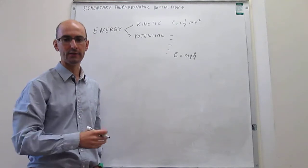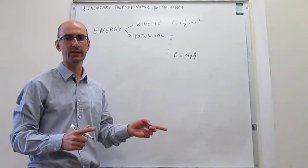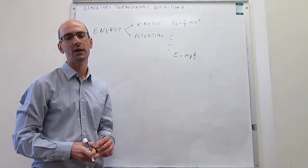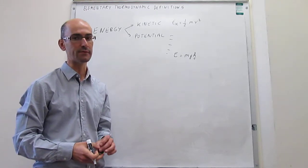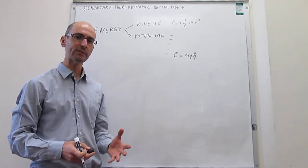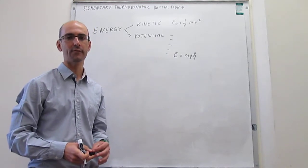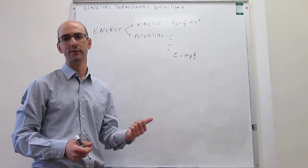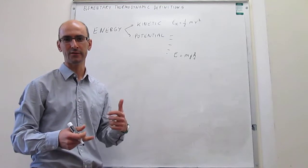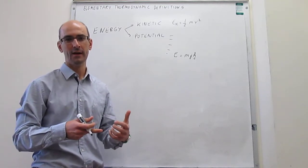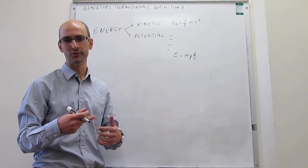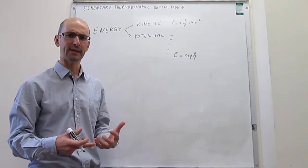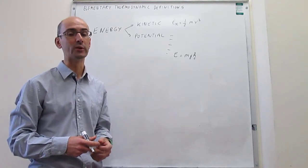That is the definition of energy and its two variants, kinetic and potential. For a molecular system, the calculation of potential energy is extremely difficult because you would need to calculate all of the possible interactions between the particles of your system — all of the interactions between electrons and protons of the nucleus, proton-proton repulsions, electron-electron repulsions and interactions. That turns out to be exceedingly difficult, but in essence that's what the potential energy of your molecule would be.